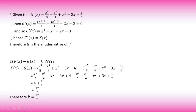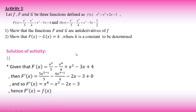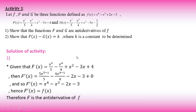Notice that both F and g are antiderivatives of small f, but they differ only by a constant. The terms are common to both; the difference is only the constant — here F has 4 and g has −1/2. Subtracting them gives k = 17/2. The conclusion from this activity: antiderivatives always differ by a constant.